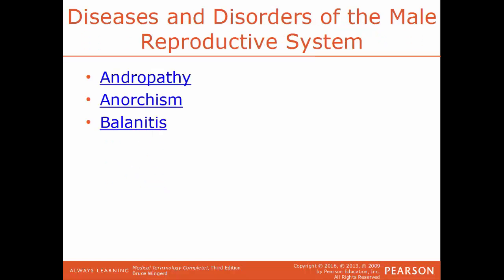Specific diseases and disorders of the male system: andropathy is any disease particular to males only — a good example is prostatitis, since only males have a prostate gland. Anorchism is the absence of a testes. Balanitis is inflammation of the glans penis, or the head of the penis.